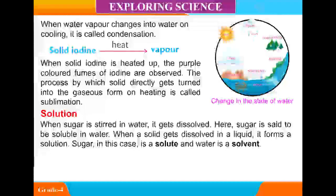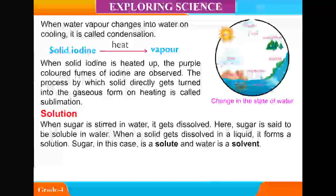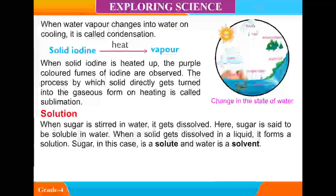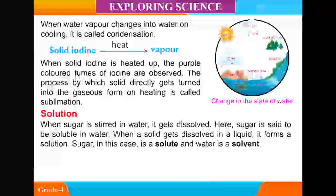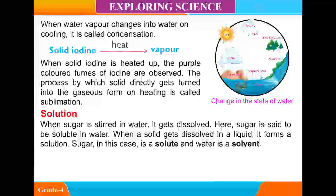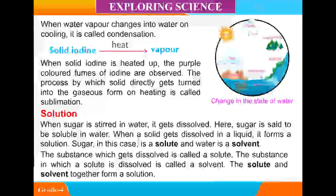Solution. When sugar is stirred in water, it gets dissolved. Sugar is said to be soluble in water. When a solid gets dissolved in a liquid, it forms a solution. Sugar in this case is a solute and water is a solvent. The substance which gets dissolved is called a solute. The substance in which a solute is dissolved is called a solvent. The solute and solvent together form a solution.